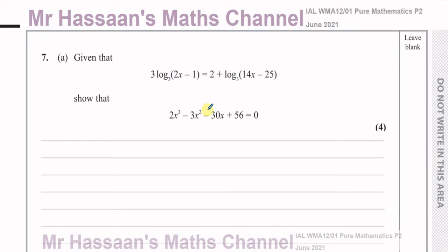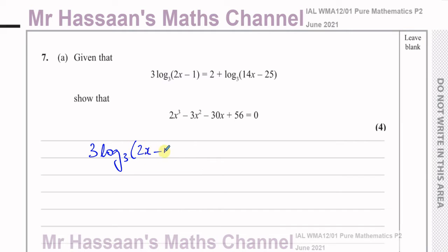First, when you want to change a logarithm equation into a non-logarithm equation, what I normally do is bring all the log terms on one side of the equation and leave the non-log terms on the other side. So here I would take away log base 3 of (14x − 25) from both sides, giving: 3 log₃(2x − 1) − log₃(14x − 25) = 2.